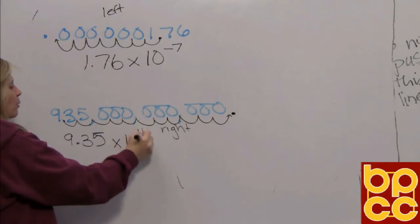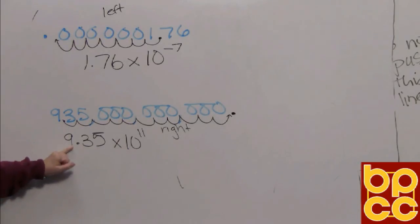And so 935 billion written in scientific notation looks like this: 9.35 times 10 to the 11th power.